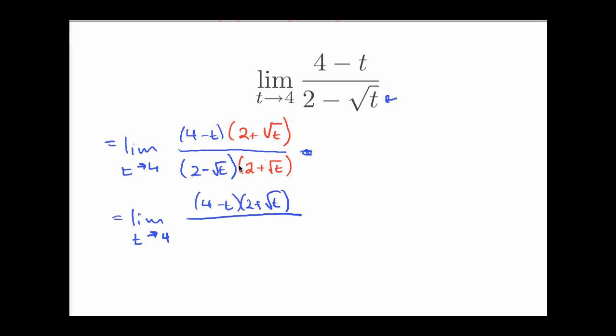If I FOIL this out, I get 4. Outer is plus 2 radical t. Inner is minus 2 radical t. And last is minus radical t times radical t. That just gives me t.